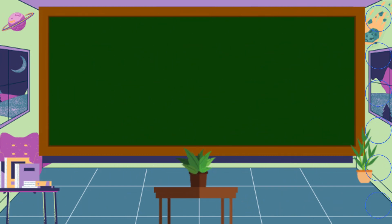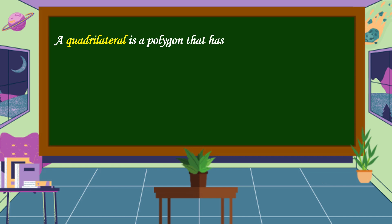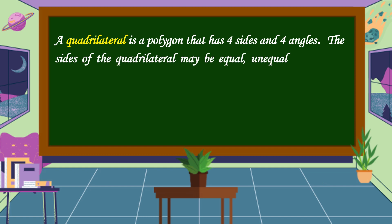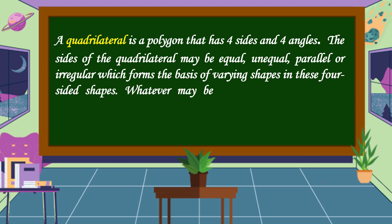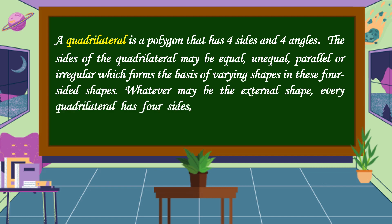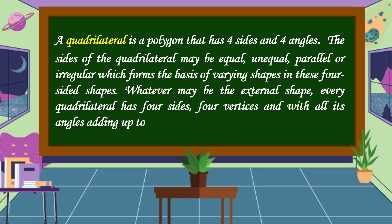What is a quadrilateral? A quadrilateral is a polygon that has four sides and four angles. The sides of the quadrilateral may be equal, unequal, parallel, or irregular, which forms the basis of varying shapes in these four-sided shapes. Whatever may be the external shape, every quadrilateral has four sides, four vertices, and all its angles adding up to 360 degrees.